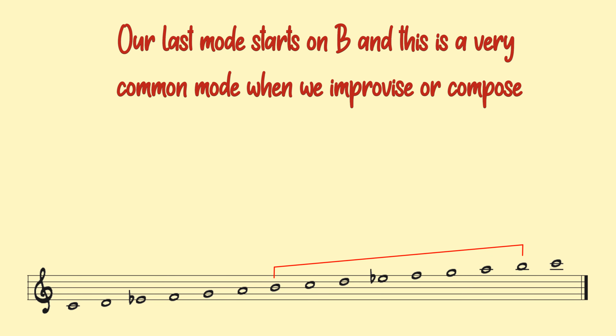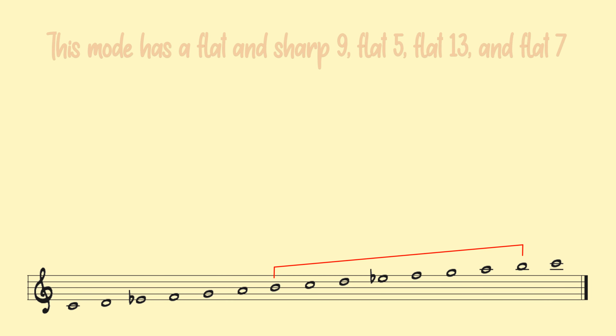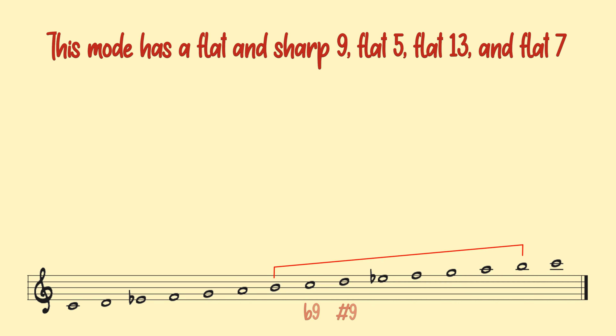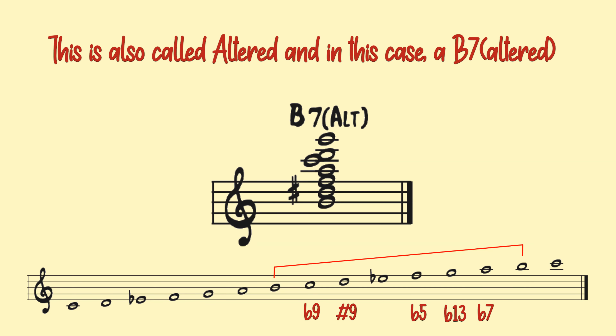Our last mode starts on B, and this is a very common mode when we improvise or compose. This mode has a flat and sharp 9, b5, b13, and b7. This is called altered — in this case, a b7 altered.